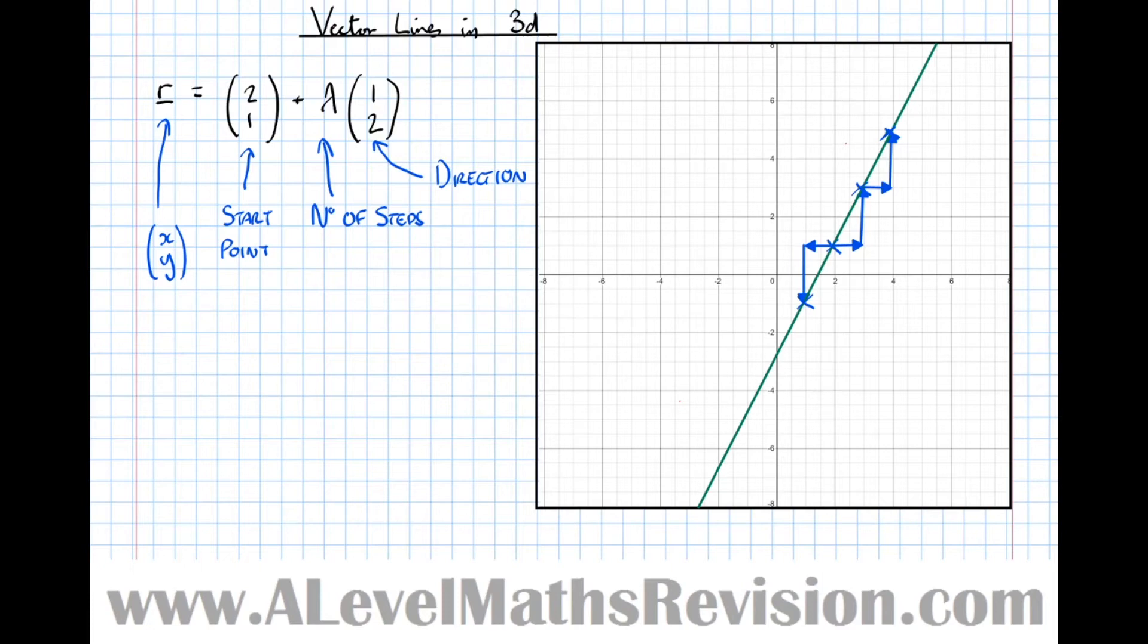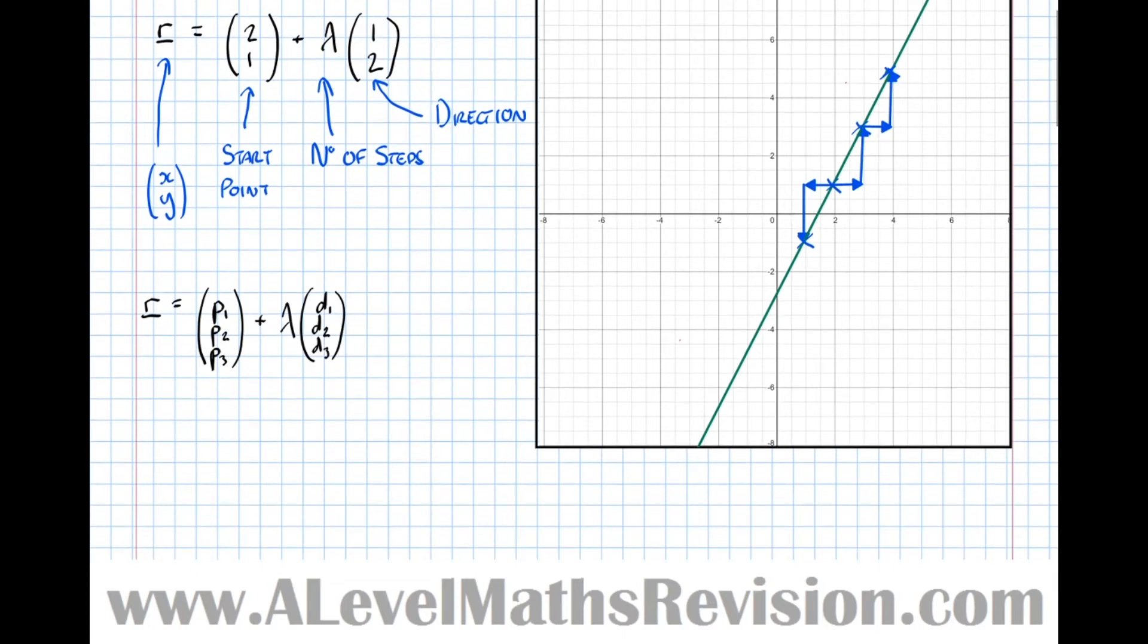Now, when we do lines in three dimensions, just don't try to visualize it. It's very difficult to visualize things happening in 3D. So think of it in purely mathematical terms. So in three dimensions, the equation of a line has this form: R equals our start point, let's call it (P1, P2, P3), plus lambda, and our direction, which I'm going to call (D1, D2, D3). And it's analogous to what I've just spoken about before.